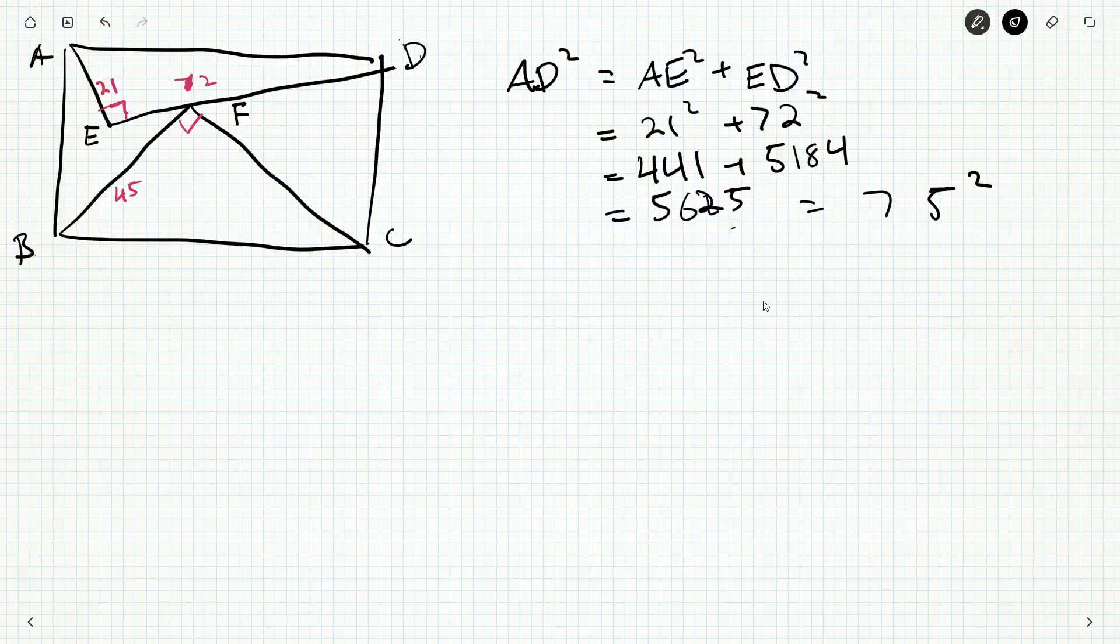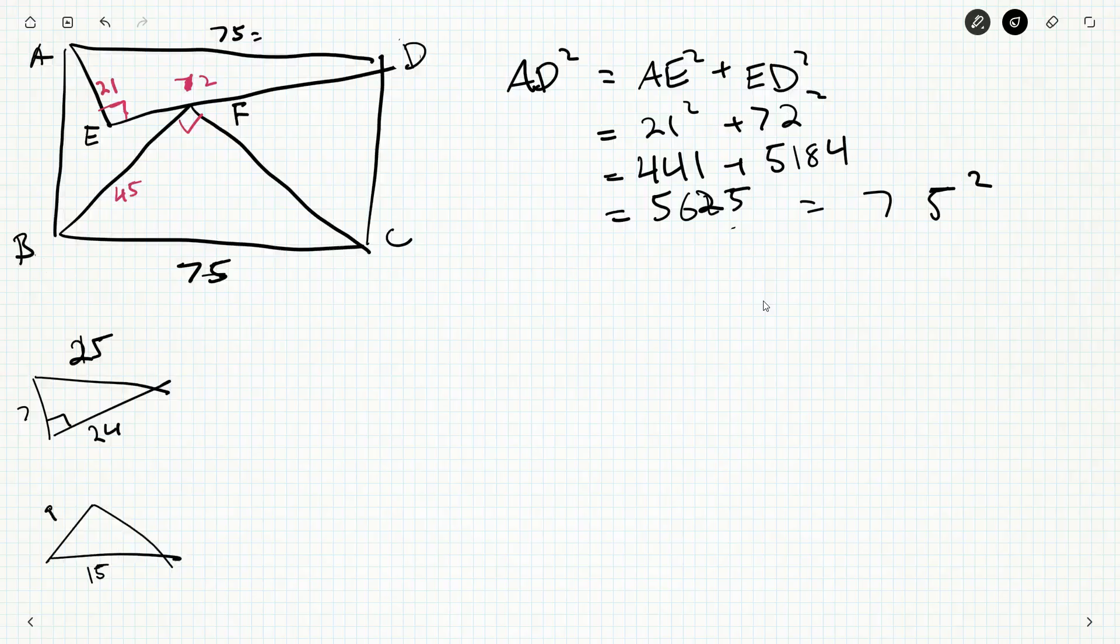So AD is 75, and that means that BC is 75. This guy here is 3 times 25, this is 3 times 24, and this is 3 times 7. So it's a 7-24-25 triangle is basically what we've got up here, just scaling. Down at the bottom, the 75 and the 45 have a factor of 5 in common, so we get 5 times 15 and 5 times 9, that's 12 over here. So 5 times 12, 60 should be FC.